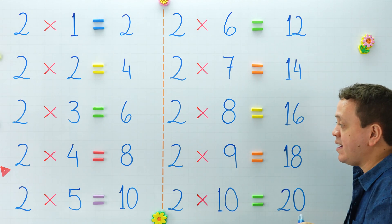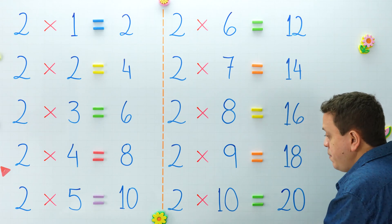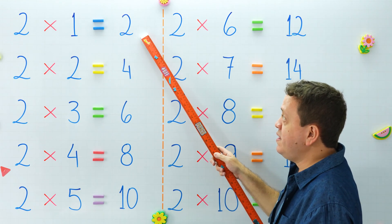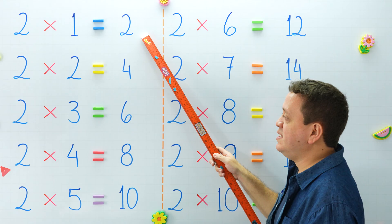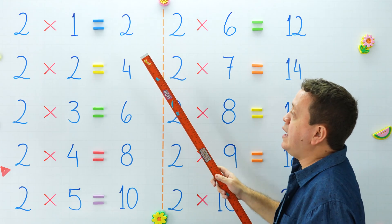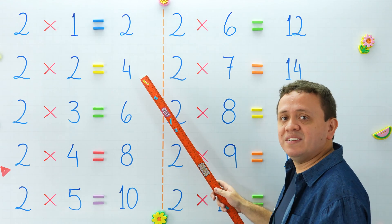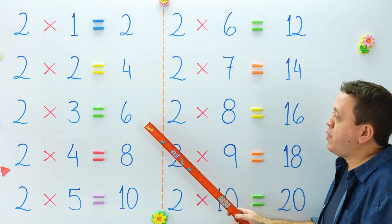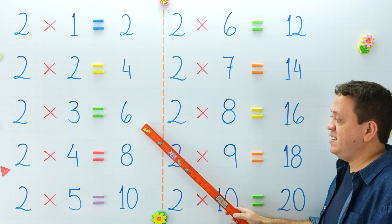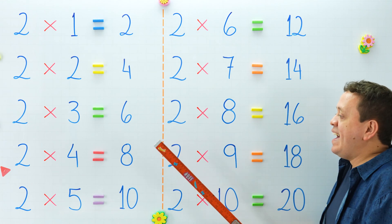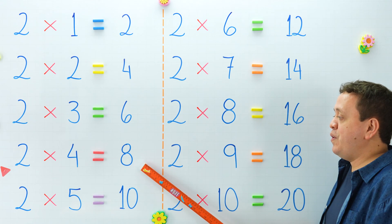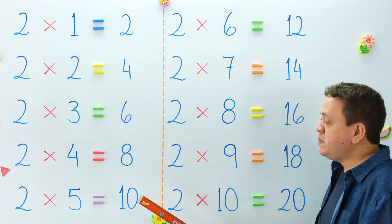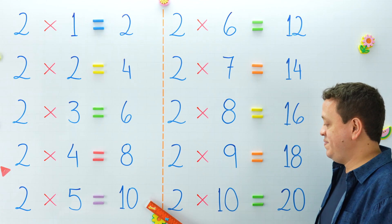Why don't we take another look at the products of this table? But this time, you gotta help me. What is 2 times 1? And 2 times 2 equals? 2 times 3 equals? 2 times 5 is equal to?